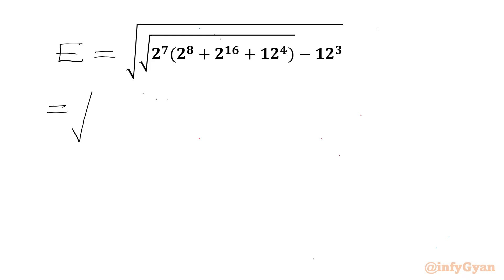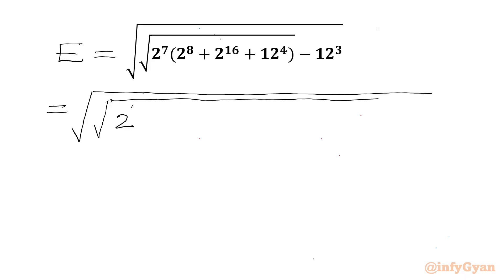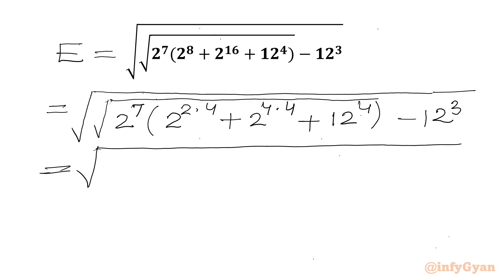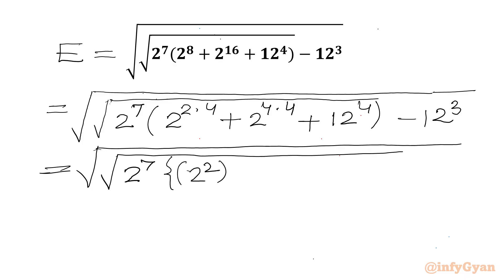We can write E equal to square root of 2 power 7 times 2 power 8. We can write 2 power 2 times 4, plus 2 power 4 times 4, plus 12 power 4. Then minus 12 cube. This will be equal to square root of square root of 2 power 7. Using exponent laws, I can write 2 power 2 times 4 as 2 power 2 whole power 4, and 2 power 4 whole power 4, minus 12 cube.